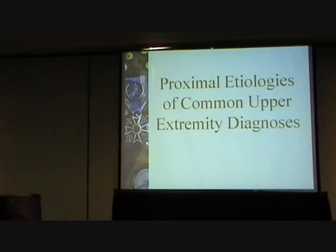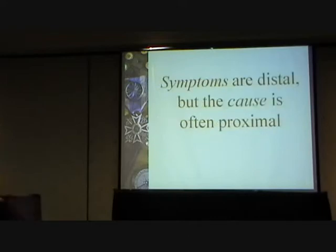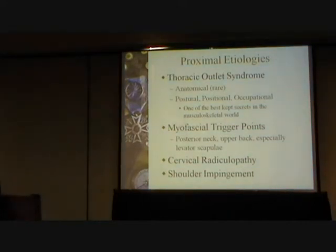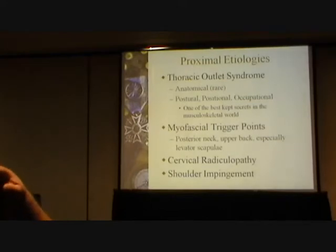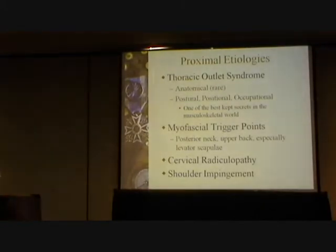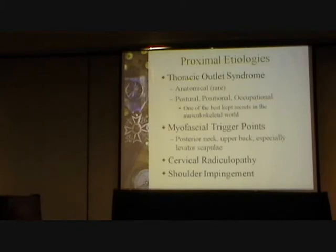Getting into our proximal etiologies of carpal tunnel and tennis elbow — the symptoms are distal, but the cause is often proximal. We have thoracic outlet syndrome, which is my personal favorite. I'm pretty passionate about this one. There's the anatomical, which is pretty rare. You don't want to say thoracic outlet to a physician, most particularly an orthopedic surgeon, because they'll quote — or misquote — the statistics on the cervical rib and the more obscure vascular anomalies. Because in their world, it's surgical or it doesn't exist. For me, it's postural, positional, and occupational — one of the world's best-kept secrets of the musculoskeletal world, and a fairly easy fix.